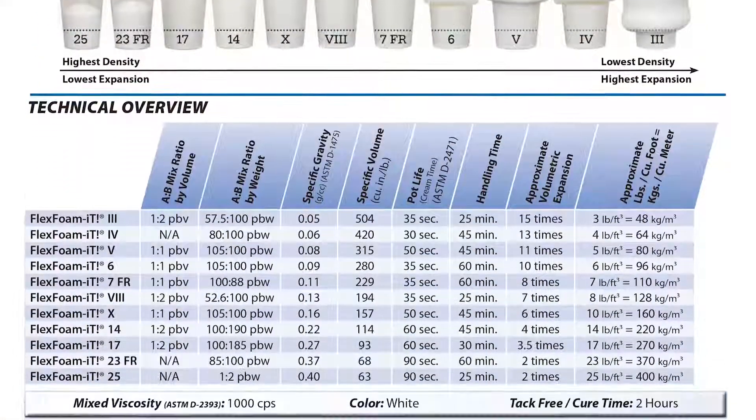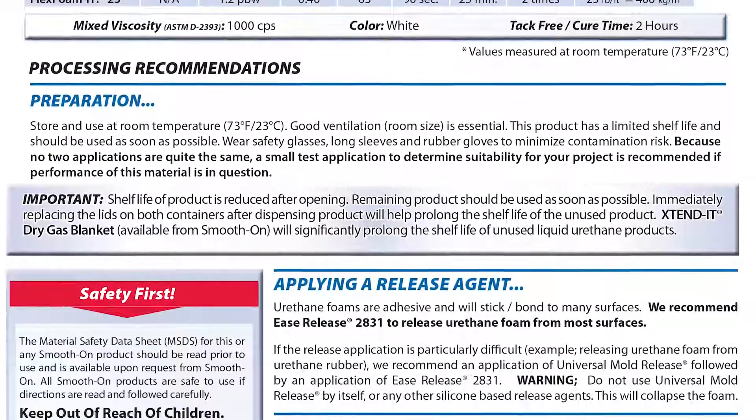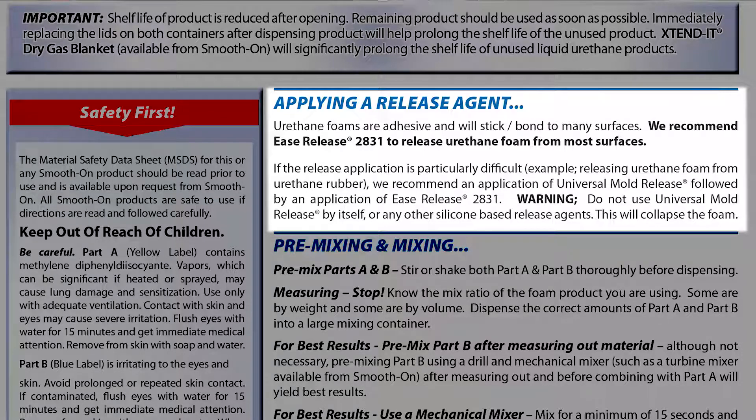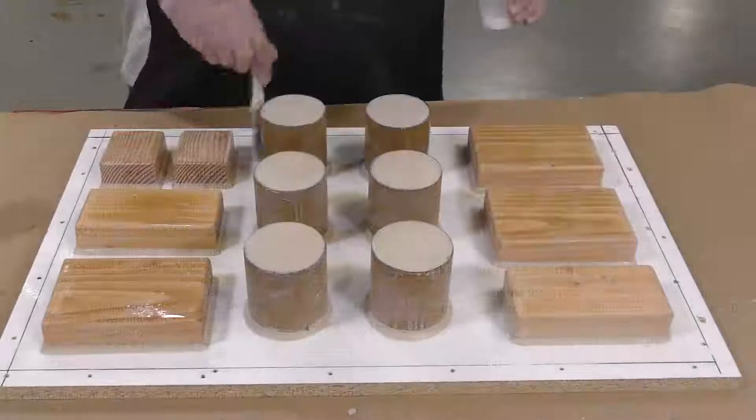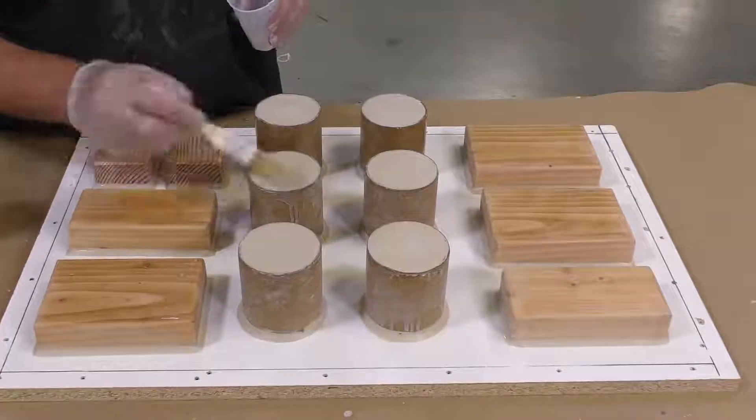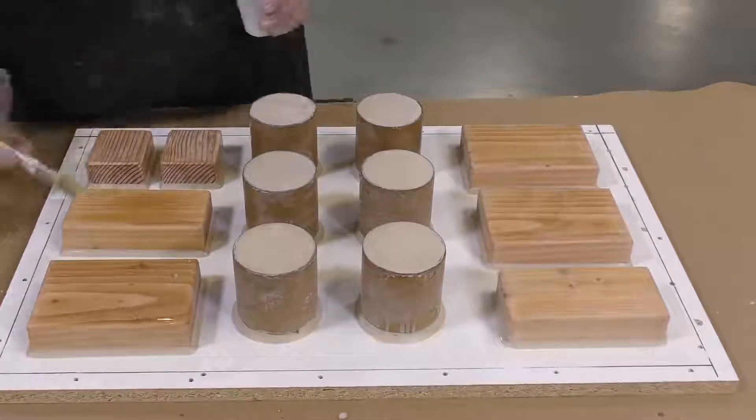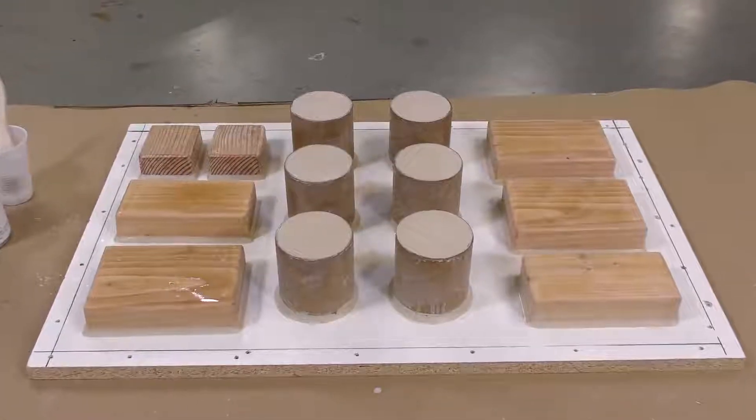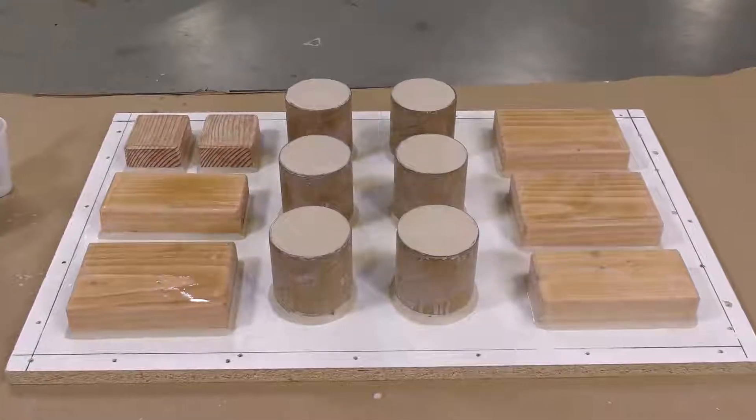It's really important to understand and know that not every release agent is the same, and choosing the wrong release agent for this application can actually cause your casting material to collapse on itself. So make sure that you use the correct release agent when dealing with urethane foams. The release agent is allowed now to flash off for about 20 to 30 minutes before proceeding on to the next step.